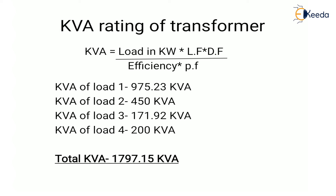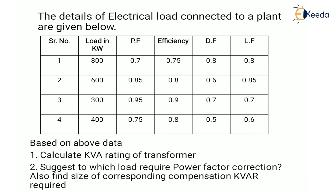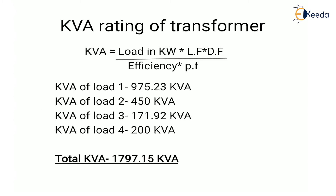To find out the KVA rating of a transformer, we have to find the KVA value of individual loads. The formula is: KVA = (load in KW × load factor × diversity factor) / (efficiency × power factor). For load 1, KW is 800, so: 800 × 0.8 (diversity factor) × 0.8 (load factor) / (0.7 (power factor) × 0.75 (efficiency)) = 975.23 KVA.